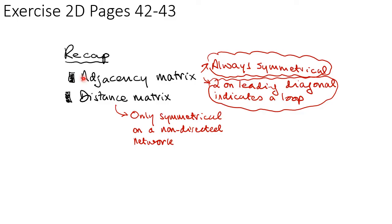So a quick recap. You need to know how to construct an adjacency matrix and how to use an adjacency matrix to construct a graph. An adjacency matrix is always symmetrical and a 2 on a leading diagonal indicates a loop. And with a distance matrix, this will only be symmetrical on a non-directed network.